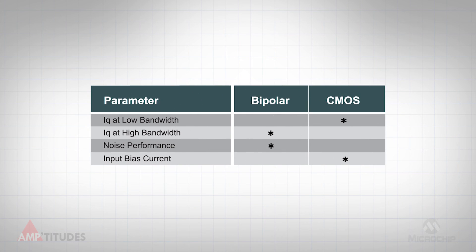These are just some of the trade-offs when considering the various process technologies available for op amps. Bi-CMOS is a relative newcomer to the field, but combines the best of both CMOS and bipolar at a price point that is becoming more and more competitive.